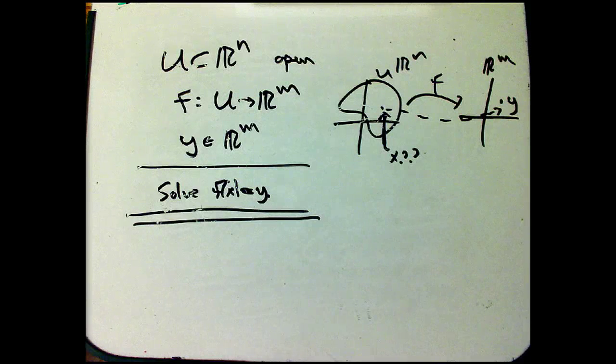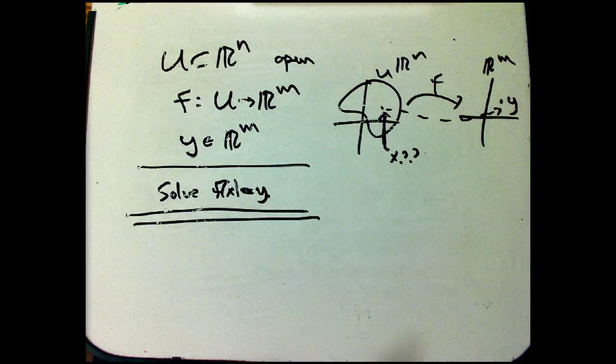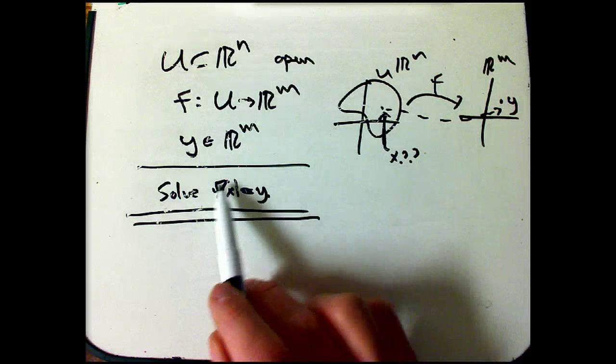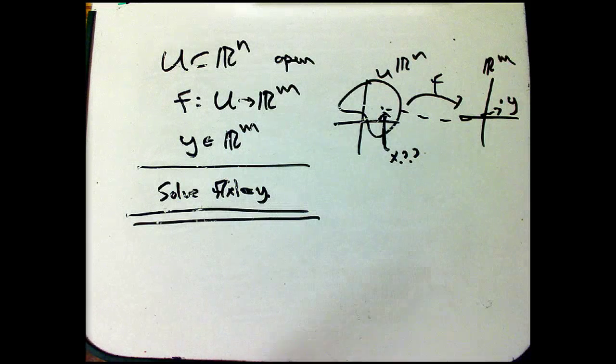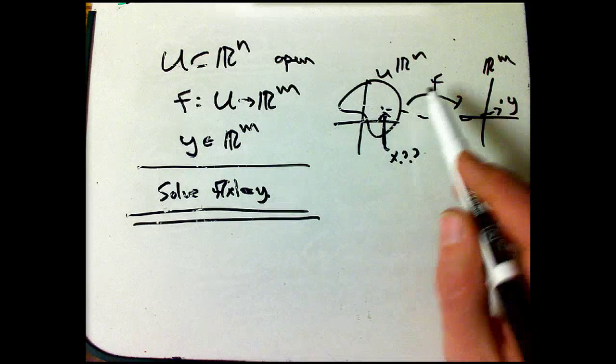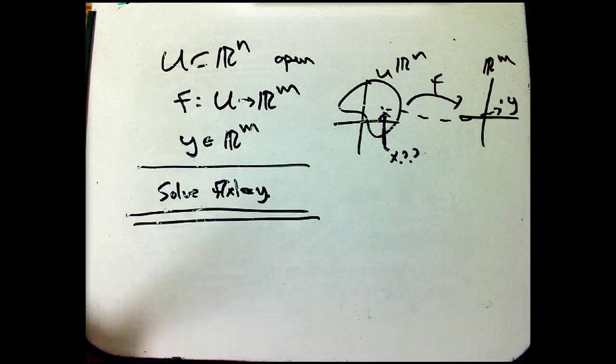Here we are for part two of the inverse function theorem. We're focusing right now on just solving f of x equals y, given y and given some function from R^n to R^m.